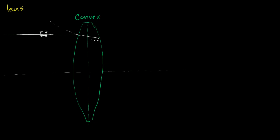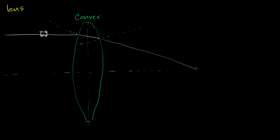Then once the ray reaches the other interface, it moves back into a faster medium — into air again. The left side of this ray comes out of the lens first, so those 'tires' are able to travel faster sooner. This deflects the ray even further downwards. So the ray exits the lens bent further toward the axis, looking something like that.